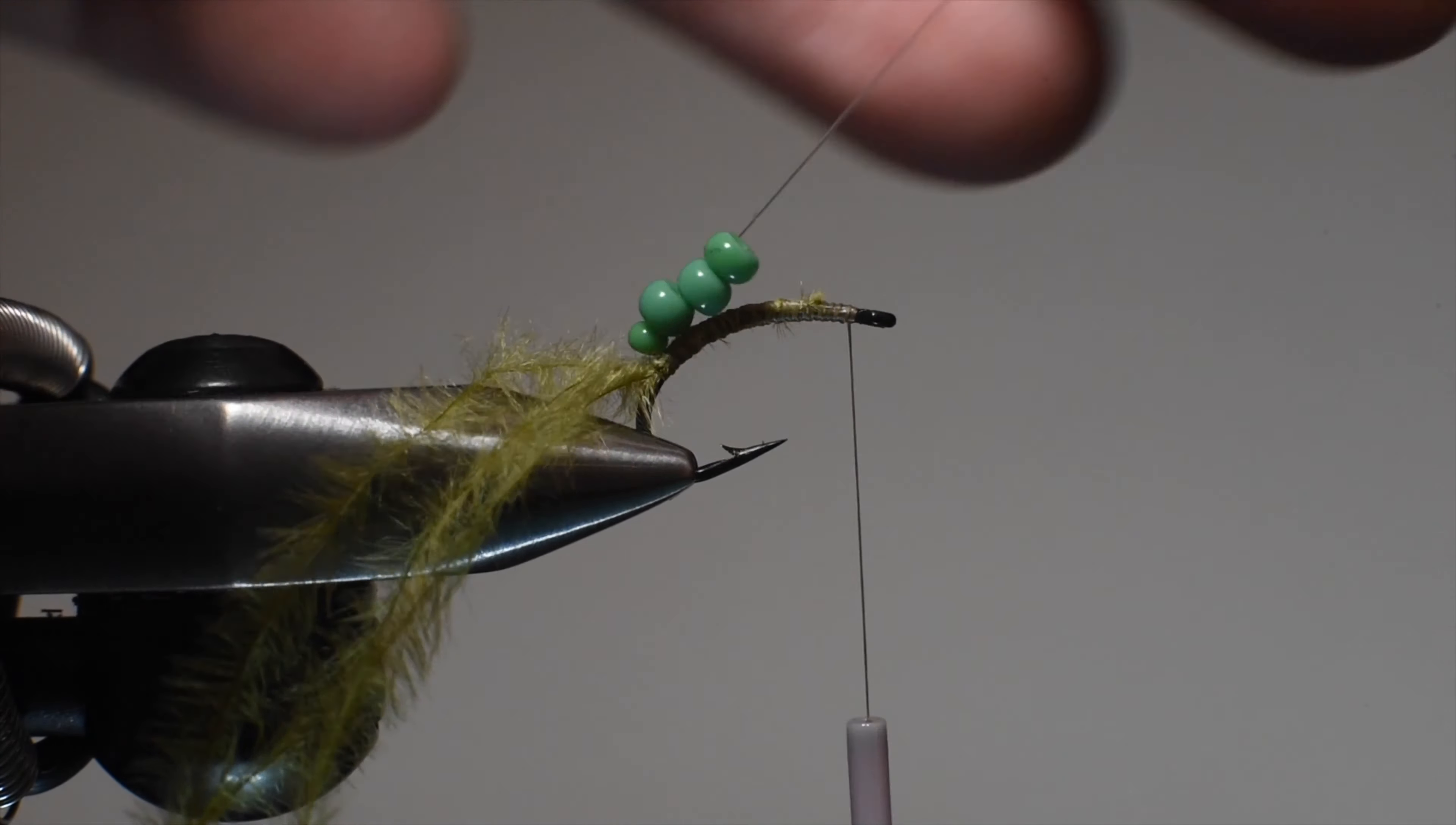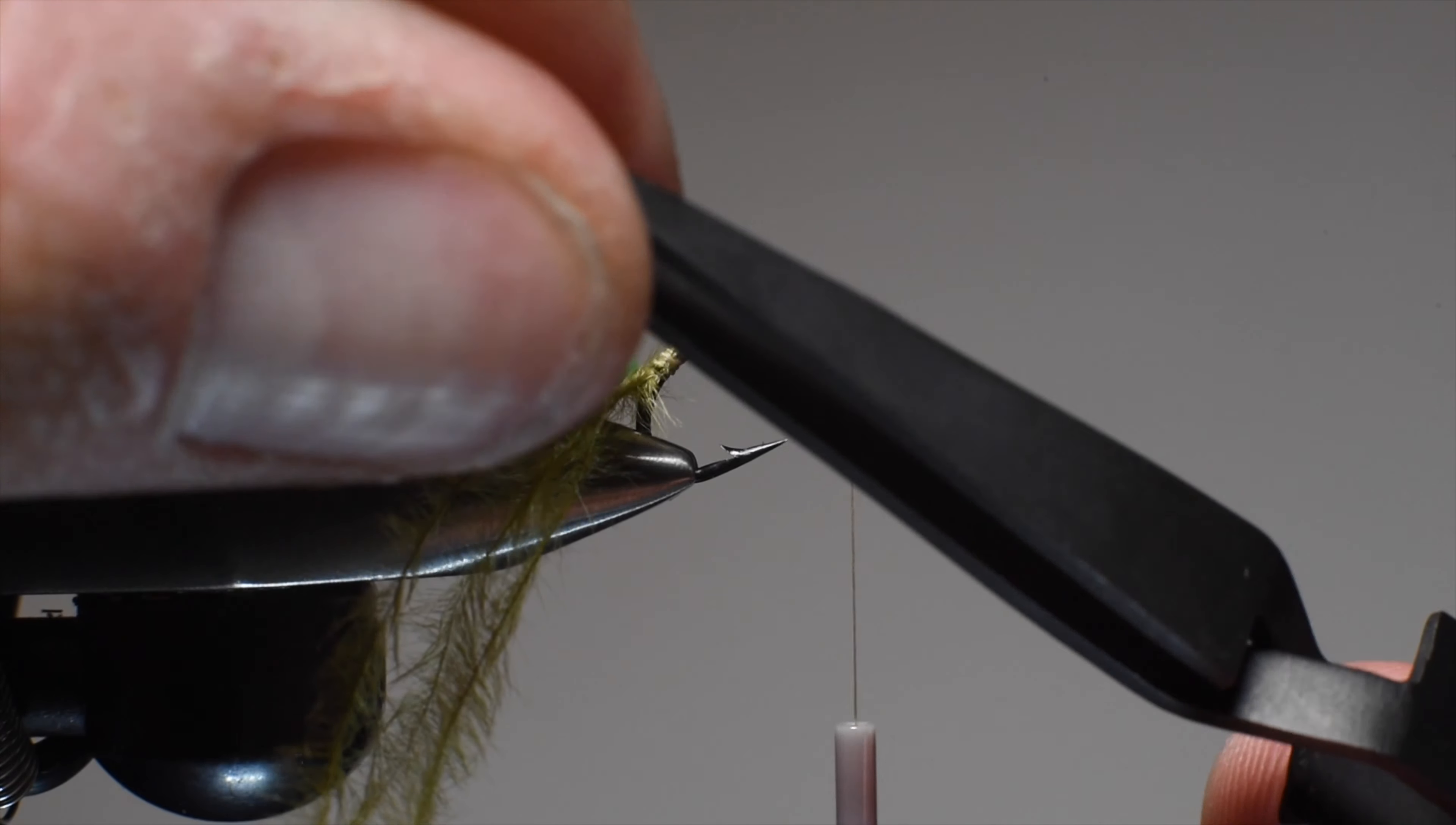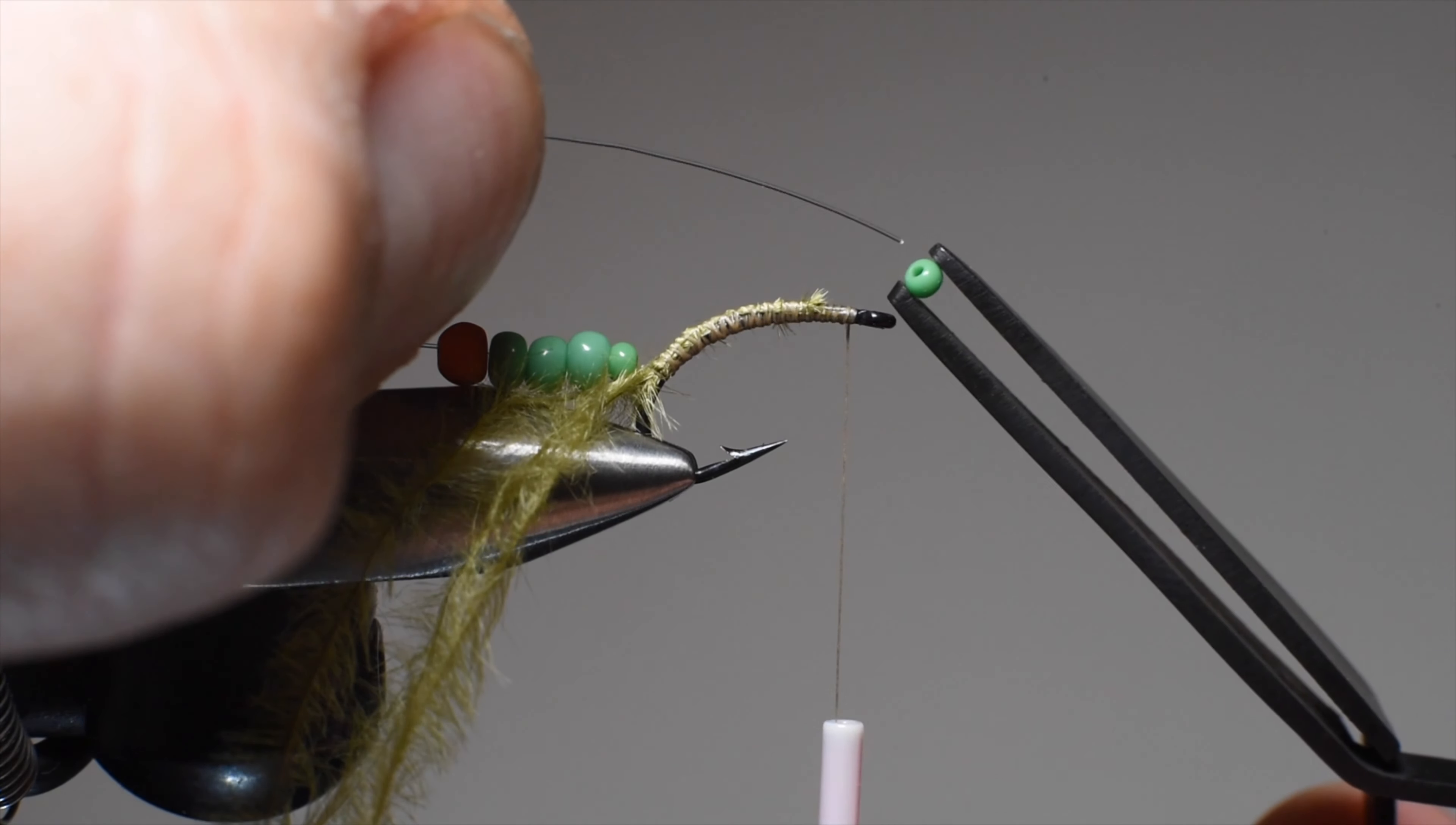I'll add one more before I do my hot spot. For my hot spot, I'm actually using a tungsten bead, and that's my weight to the fly. I've got an eighth ounce tungsten bead. I'm going to put it on with the smaller side facing the eye.